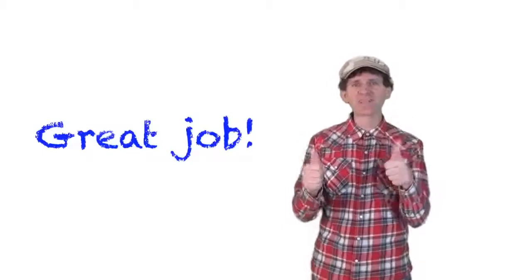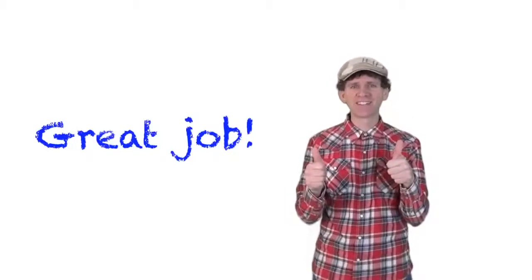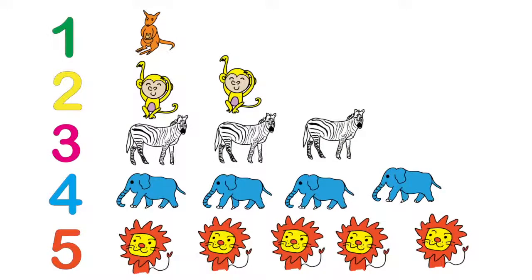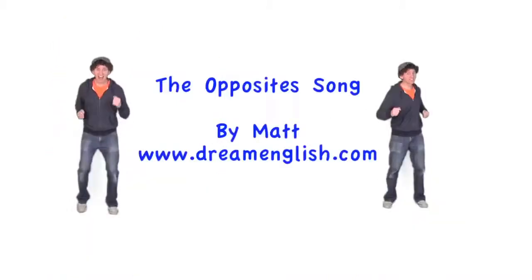Great job! Let's count the animals. Here we go. One kangaroo. Two monkeys. Three zebras. Four elephants. Five lions. Great job!